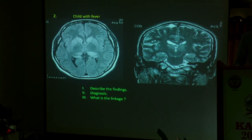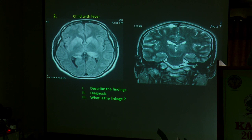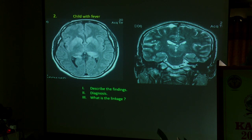Coming to the next case. A child with fever. The finding is basal ganglia involvement — and not only basal ganglia, the thalamus is also involved. Basal ganglia and thalamic hyperintense lesions are present. I have given another image in the T2-weighted coronal sections through the basal ganglia region. Tell me what findings you are dealing with.